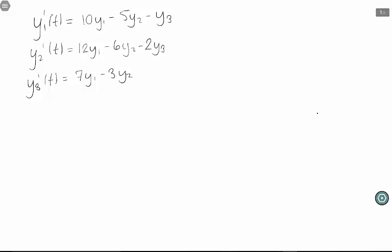First I want us to notice that this is in the correct form. We have three functions, y1, y2, and y3, functions of t, and the derivative of each function is a linear combination of the values of the other functions. So I don't have, for instance, y1 times y2, and I don't have any other functions.